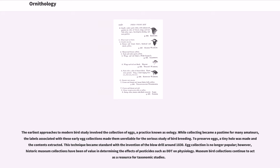The earliest approaches to modern bird study involved the collection of eggs, a practice known as oology. While collecting became a pastime for many amateurs, the labels associated with early egg collections made them unreliable for the serious study of bird breeding. To preserve eggs, a tiny hole was made and the contents extracted. This technique became standard with the invention of the blow drill around 1830. Egg collection is no longer popular; however, historic museum collections have been of value in determining the effects of pesticides such as DDT on physiology.